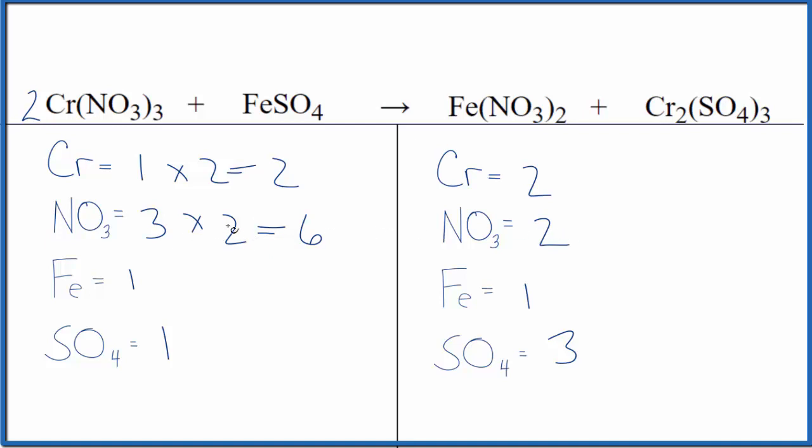Might as well balance the nitrates here. If we put a three as our coefficient, we have two times one times three. So two times three, we get six nitrates. Those are balanced.